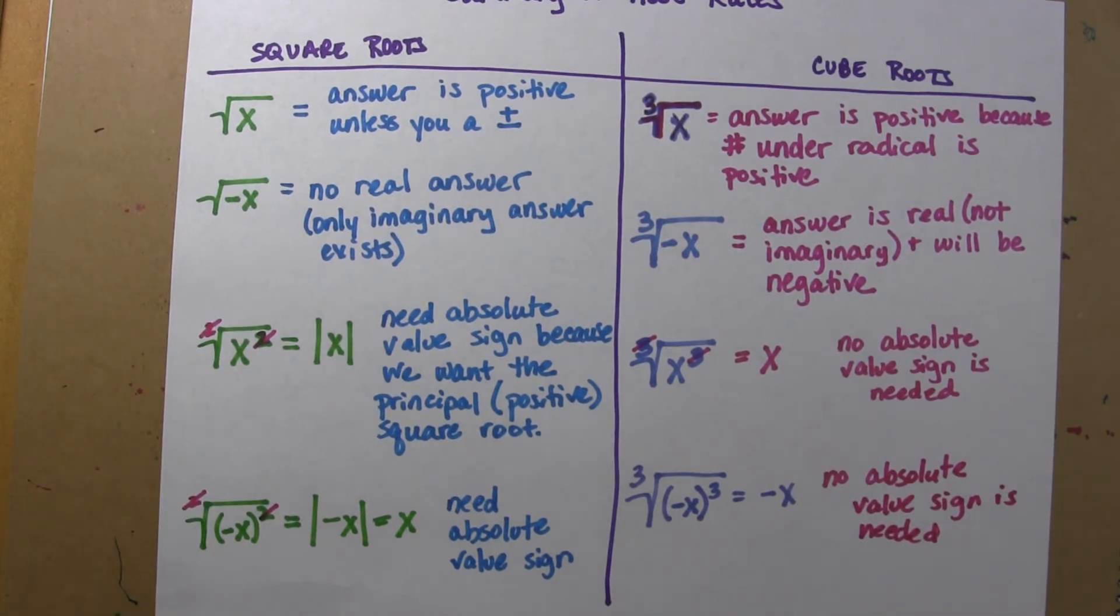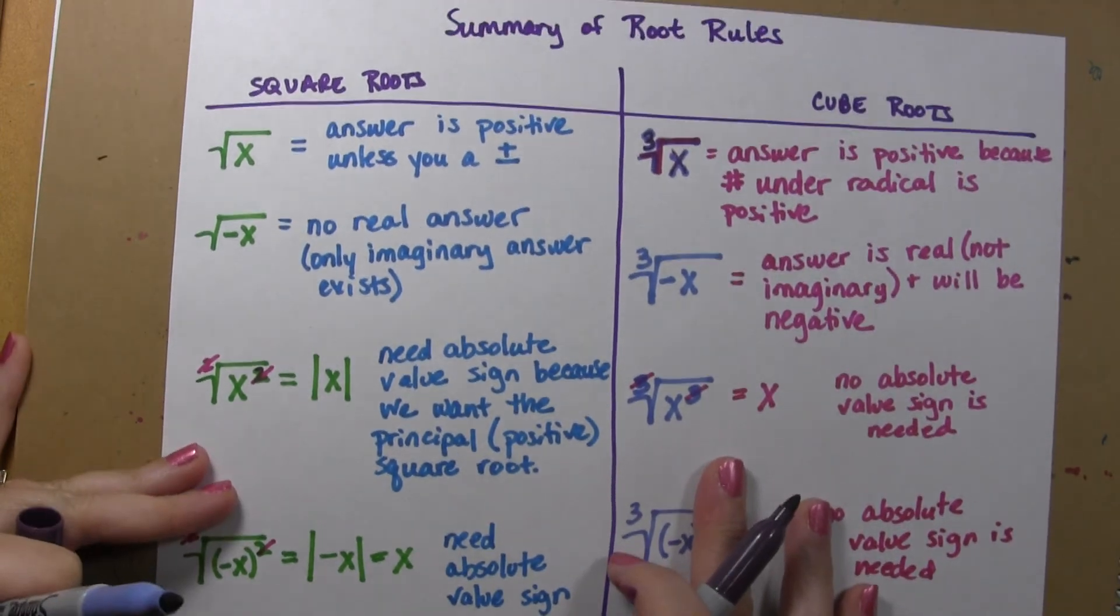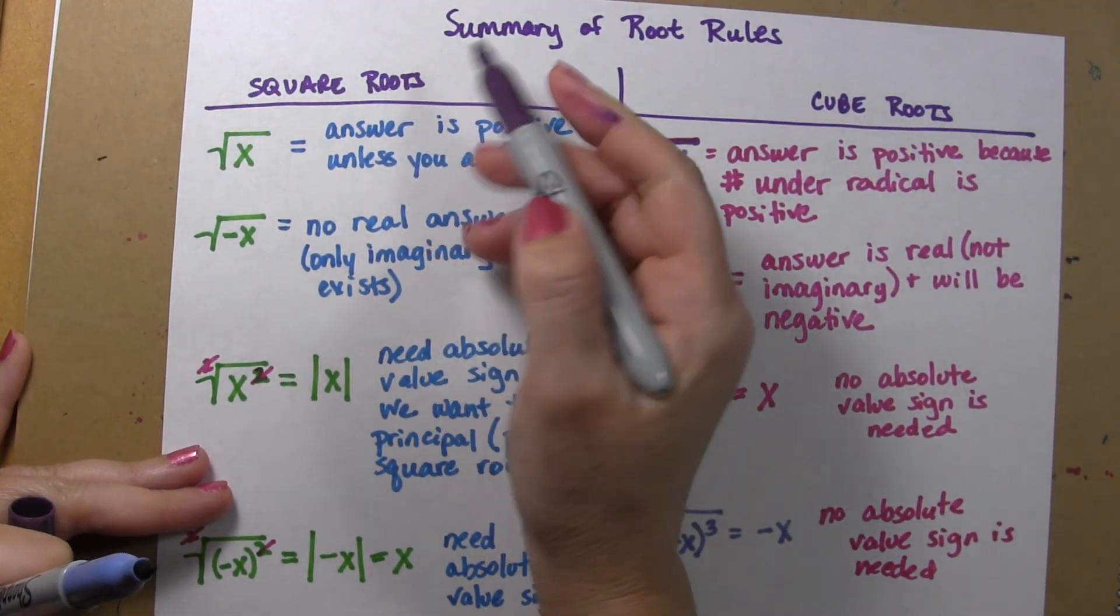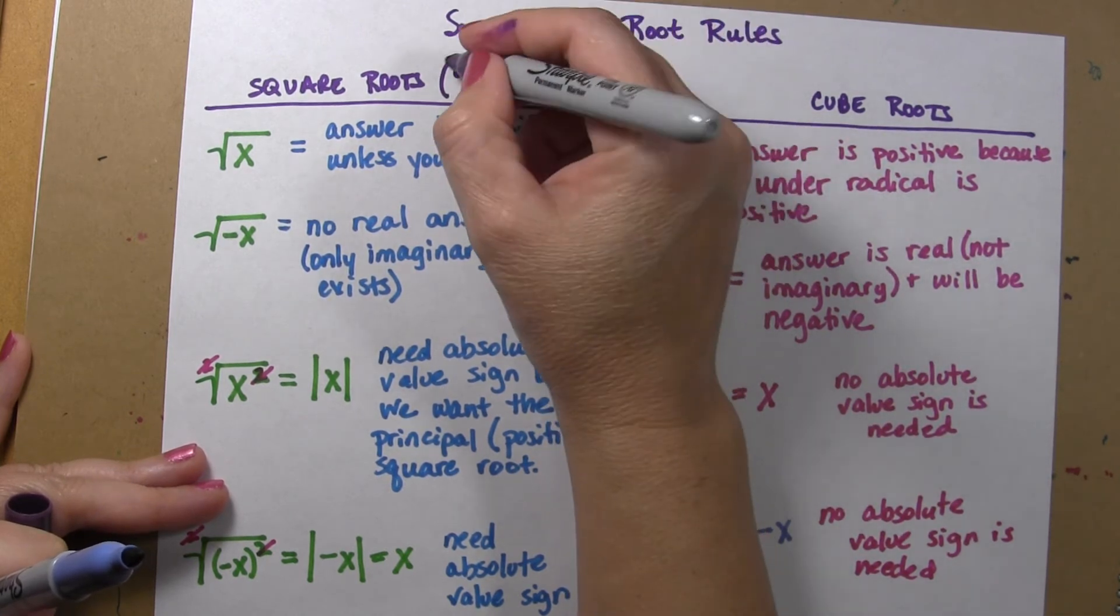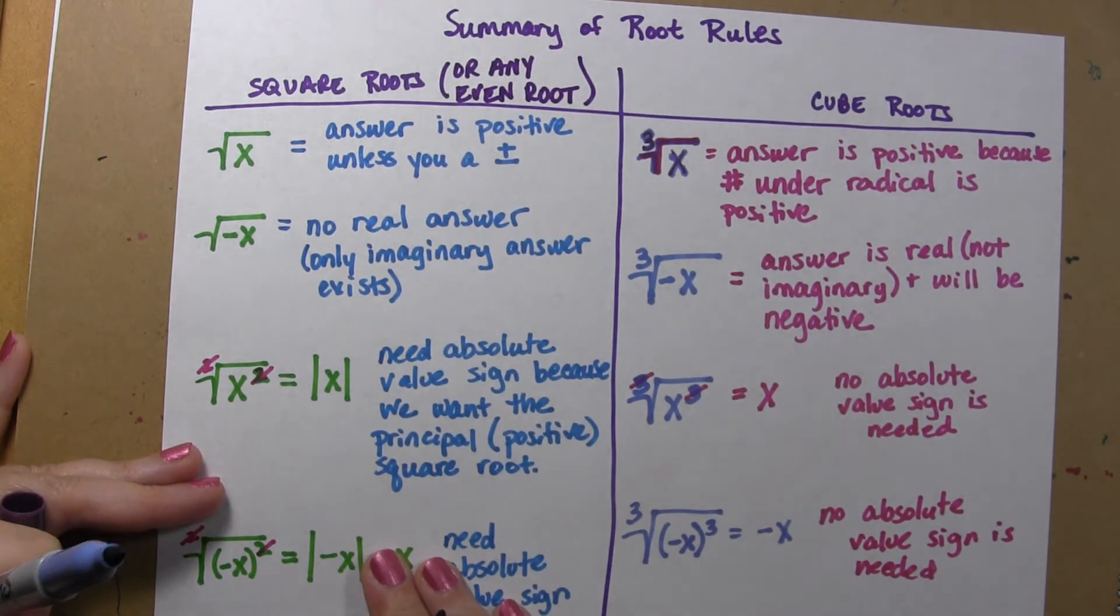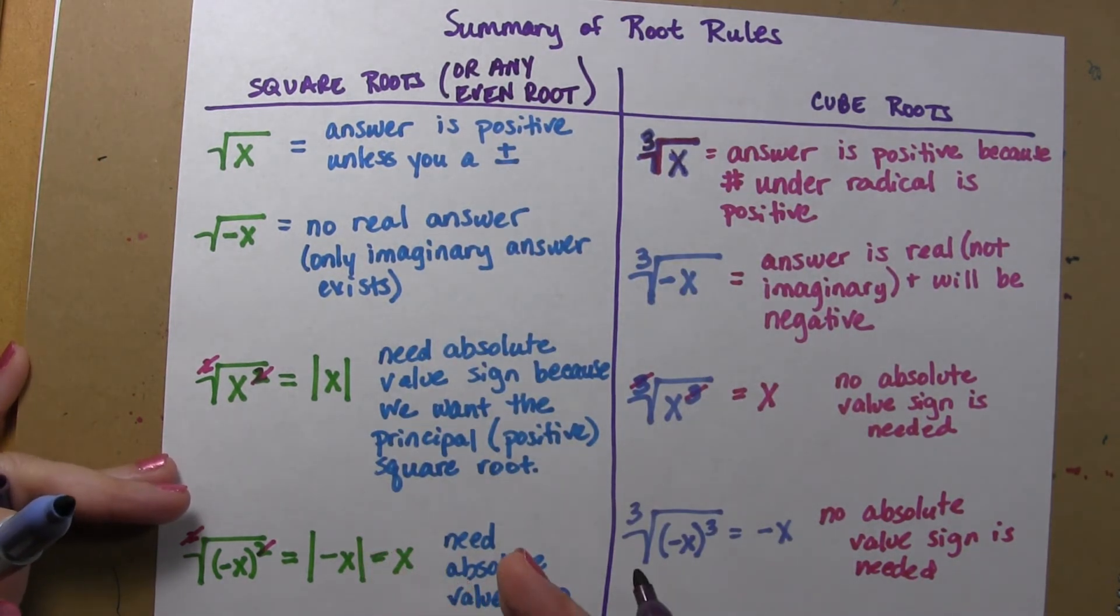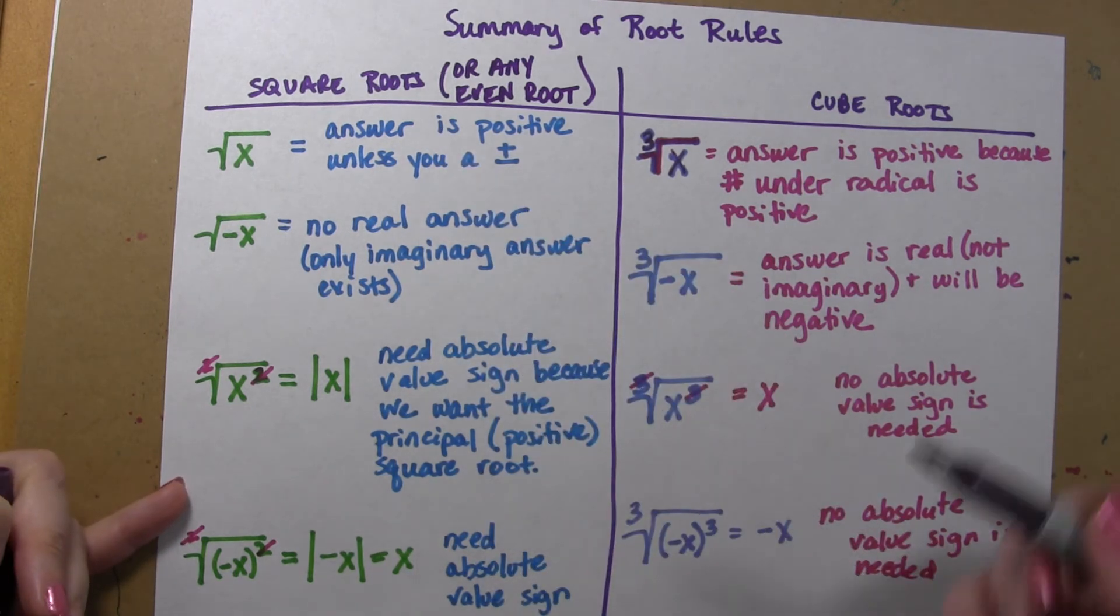Now the only last thing for you to remember is that these rules over here apply to square roots or any even root. So you follow these same rules if you are taking the fourth root, the sixth root, the eighth root, the 22nd root. As long as it's an even number, you get to follow these rules.